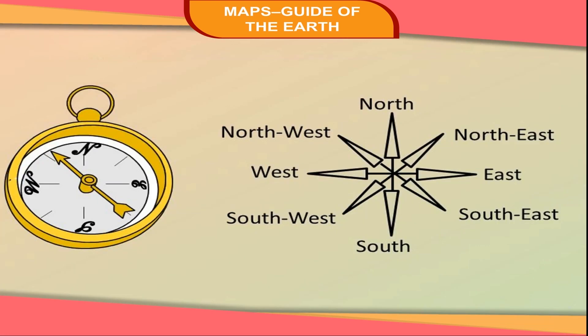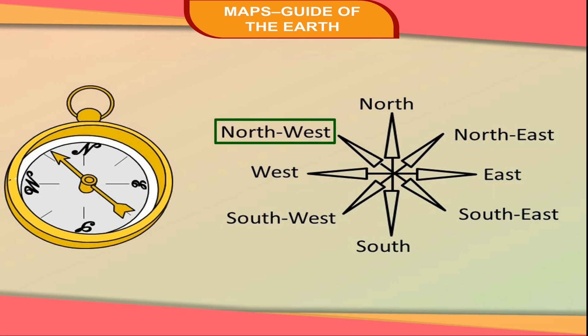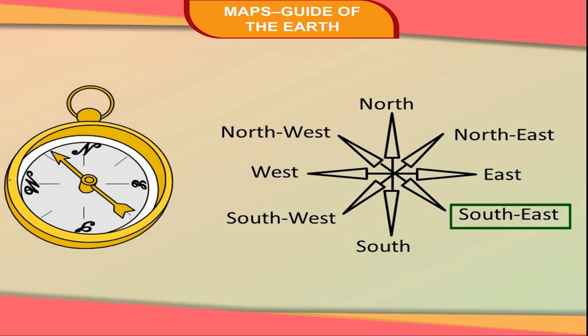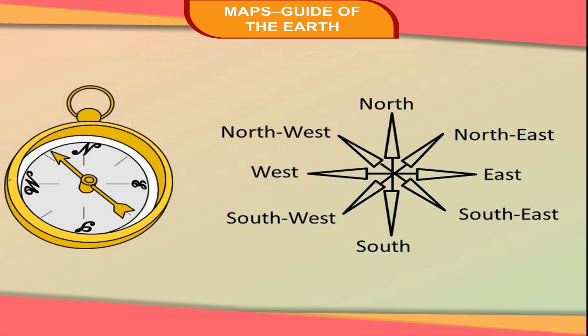Apart from the main directions, there are also four subdirections. Between the north and east lies the north-east. Similarly, the north-west lies between north and west. The south-east lies between south and east. Between south and west lies the south-west. The subdirections are also called intermediate directions.